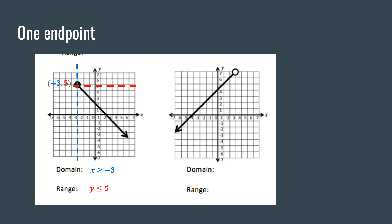Let's look at the graph on the right. This time we have an excluded point at (3, 7). Looking at the domain, the graph is heading toward the left and the domain is x is less than 3 — no underline because of the open circle. For the range, identifying 7 as the upper value with the line heading downward, the range is y is less than 7.